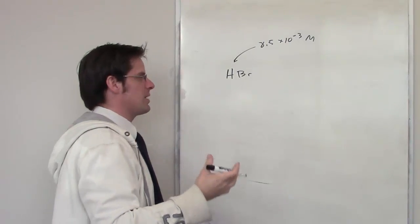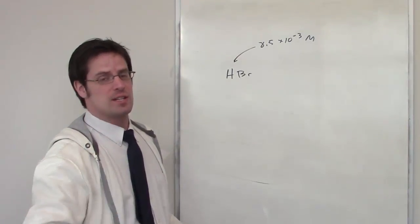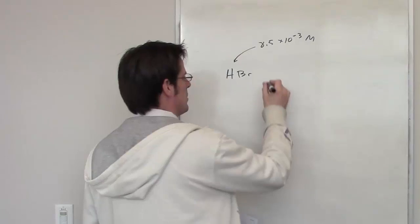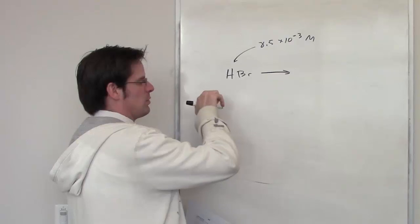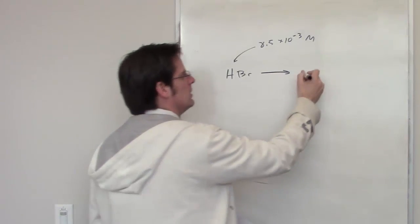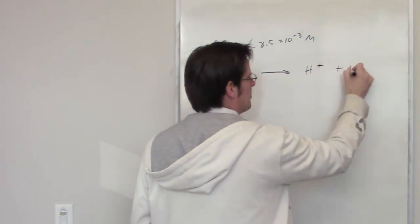This problem tells us that HBr is a strong acid. In fact, it totally is, and it's one of the strong acids I require you to memorize. What that means is when you throw HBr into water, it's going to dissociate with a virtually one-way arrow to form H+ and Br-.